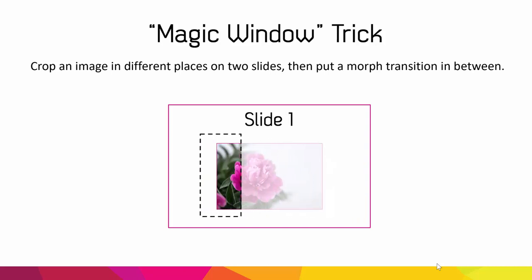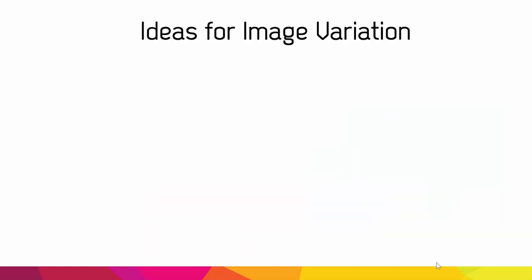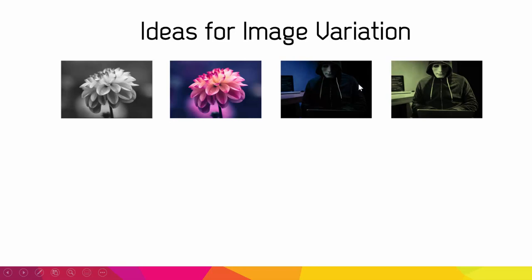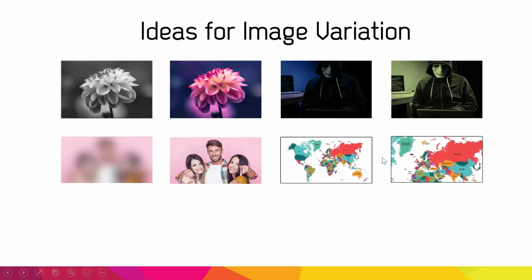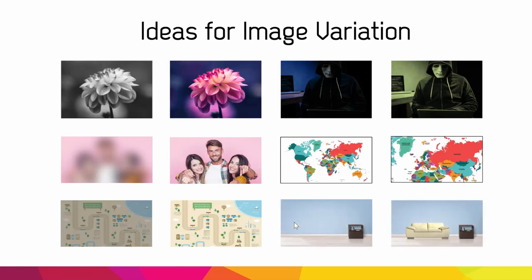The secret behind this trick is a little bit complicated to explain, but I'll do my best here. Essentially, what you want to do is create layers of different versions of the image on your two slides. Here are some ideas: you can have a black and white image going to color, a spooky nighttime vision effect, a blurry image and an in-focus image, a map that gets zoomed into on the second image, something that gets highlighted, and even an augmented reality type of effect where you have an object on one image that is not on the previous image. This is just a sampling of all the different image variations you can have for this effect, and I'll explain the x-ray effect in just a bit as well.